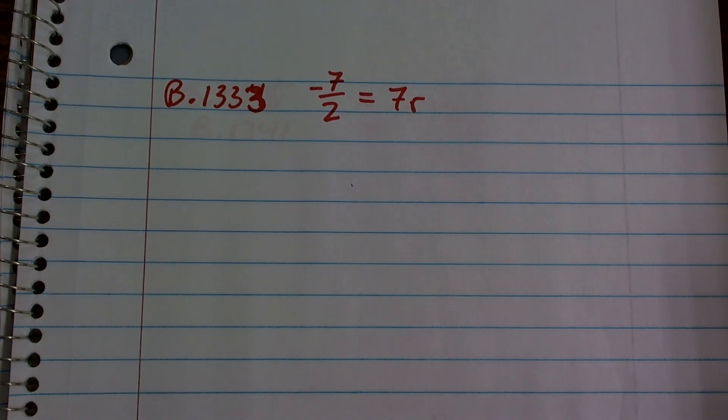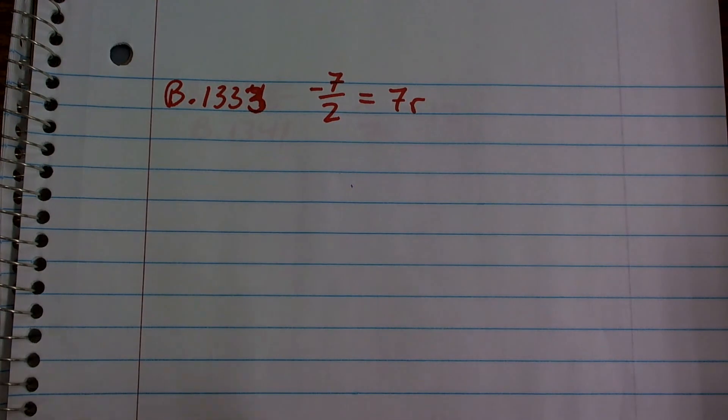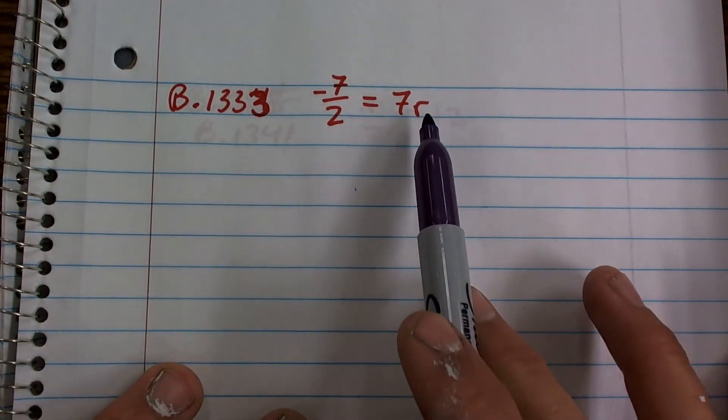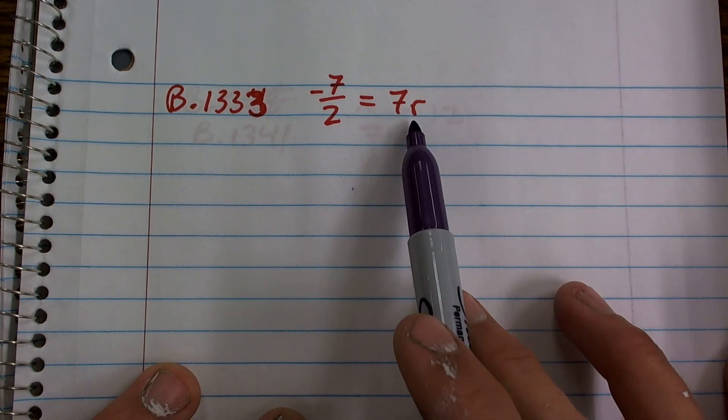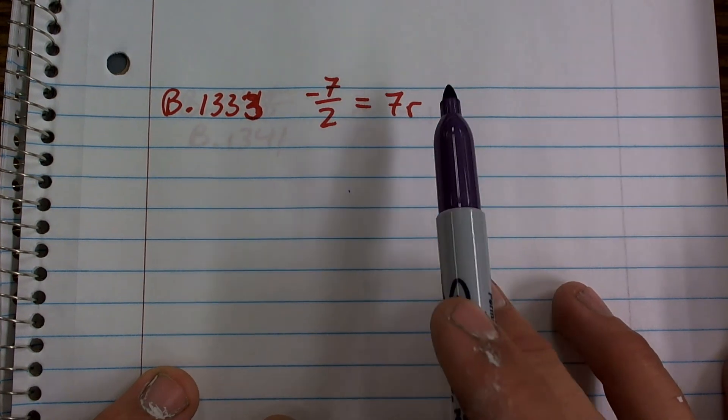Now, before you start freaking out and saying I can't solve this one, I can do the easy ones, let's just slow down and take a look at it. Again, we're just following the same rules. What is it we want to do? We need to isolate our variable r. That means we need to undo what is happening to r.